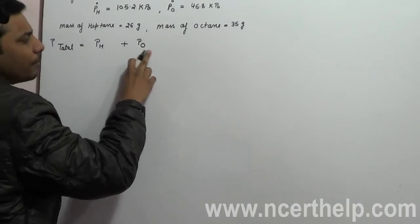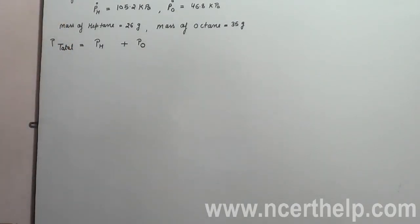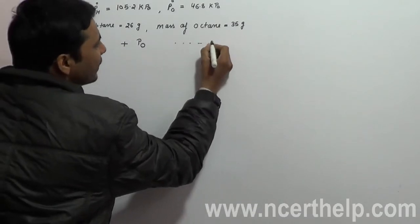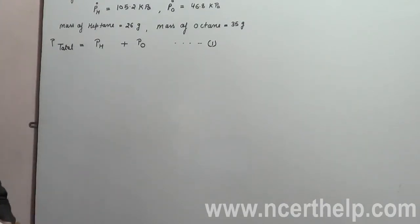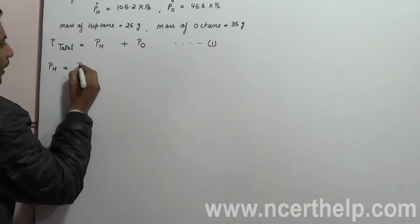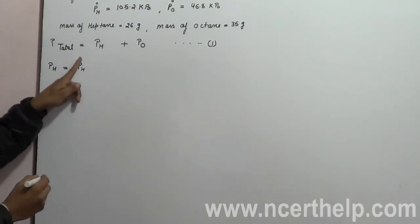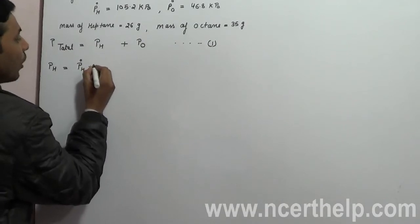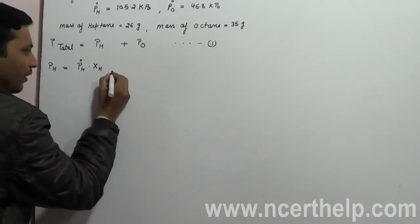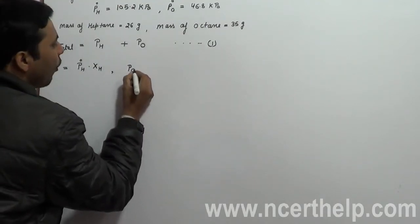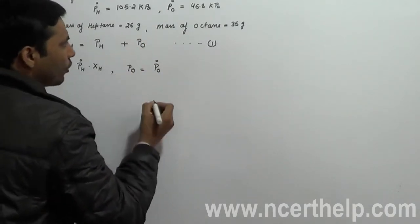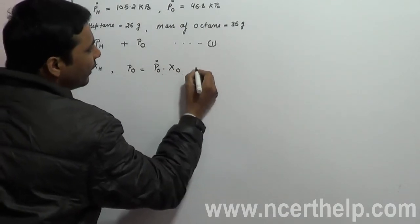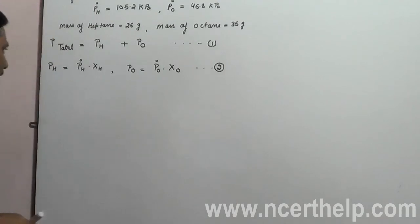Here 'H' represents heptane and 'O' represents octane. This is equation one. Now we have to find the value of P_H and P_O. The partial pressure of heptane equals the pressure of pure heptane (P°_H) multiplied by the molar fraction of heptane. Similarly, partial pressure of octane equals pressure of pure octane multiplied by molar fraction of octane. This is equation two.